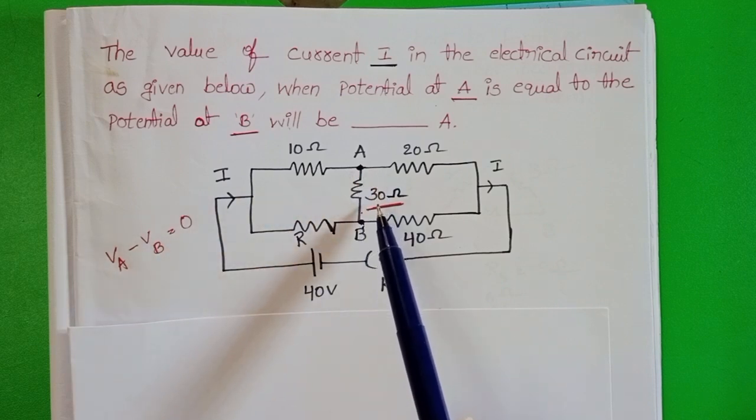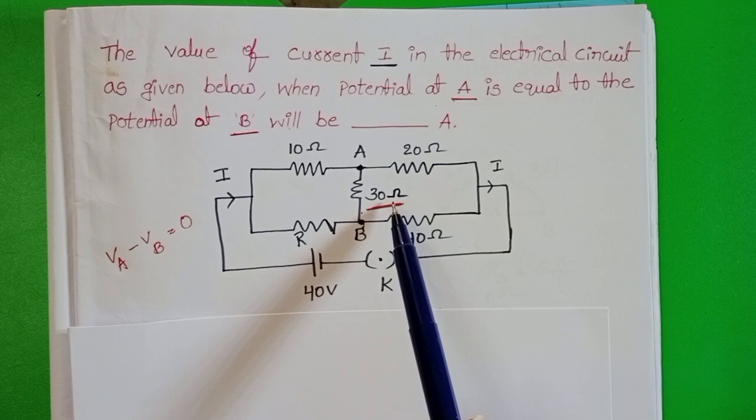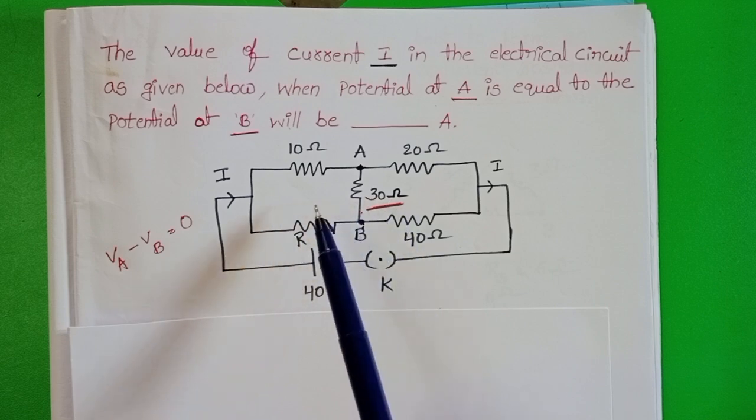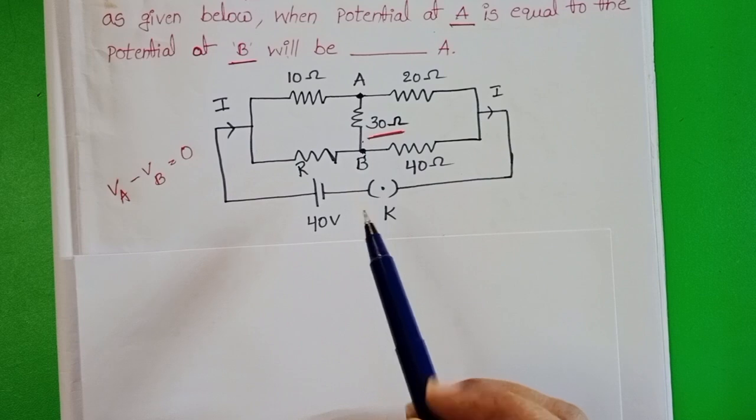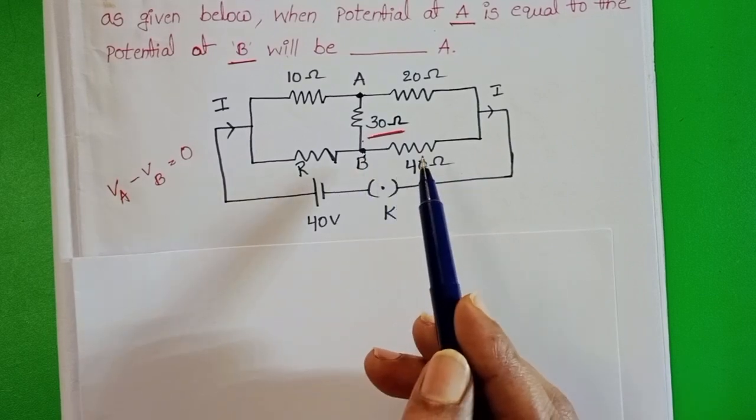Then there is no flow of electric current through the 30 ohm resistor. So this resistor is not working in the circuit. Then the circuit is like a balanced Wheatstone bridge.